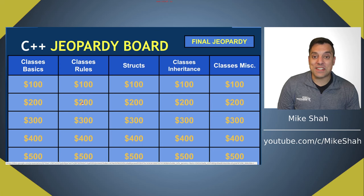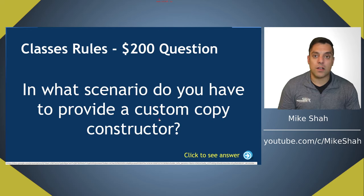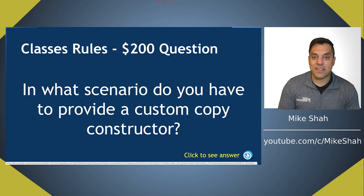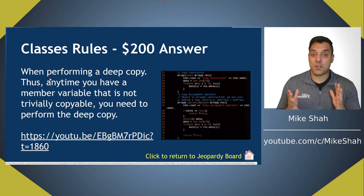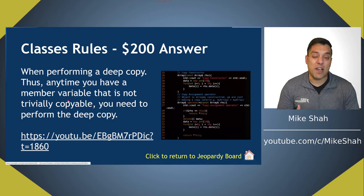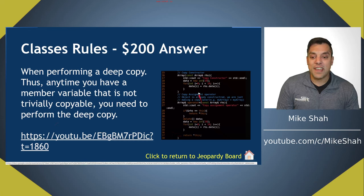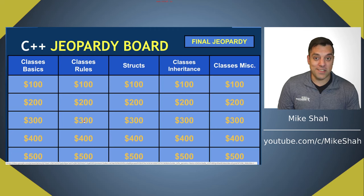For 200: what scenario do you have to provide a custom copy constructor? Anytime you're performing a deep copy — anytime you have a member variable that's not trivially copyable, so not a primitive type like integers, floats, or chars. If you have a member variable that's a pointer where you're allocating memory, you would need to write your own copy constructor.